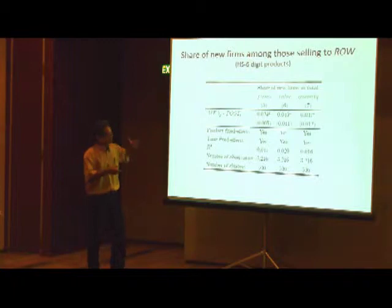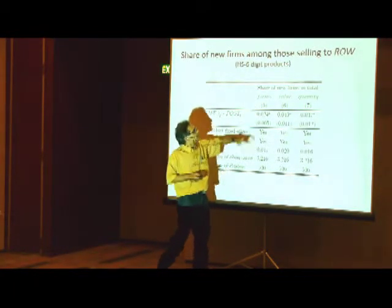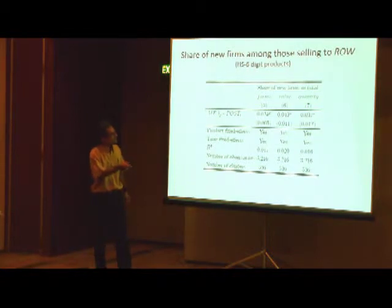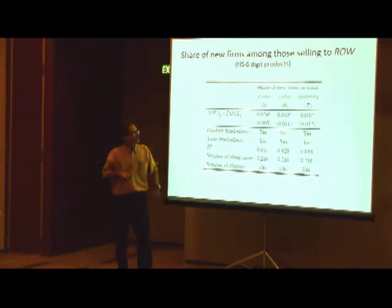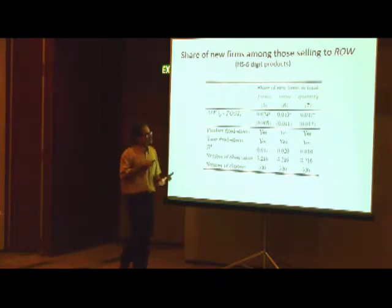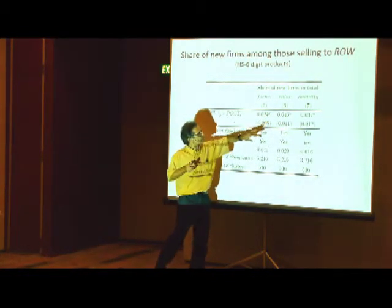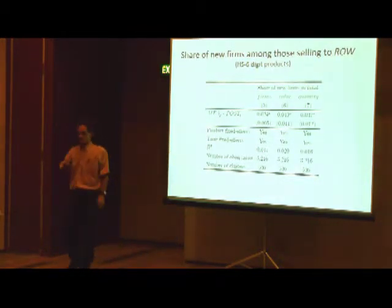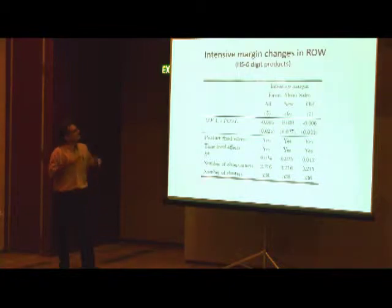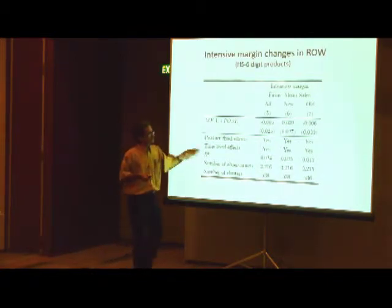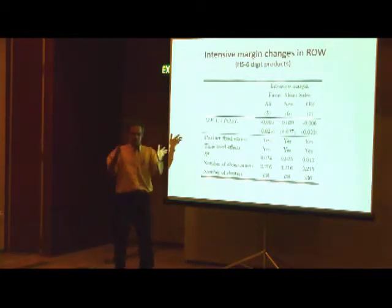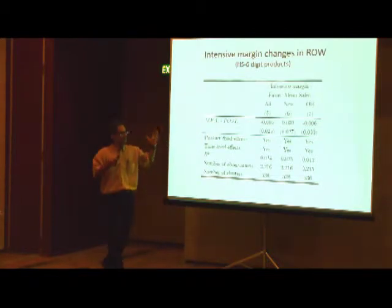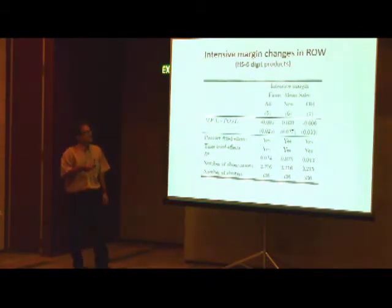There is an effect on the contribution of new firms to the exit rate, which increases after the shock — something we should expect: we have more entry, so we have more new firms, and these new firms are known to fail more quickly than established firms, and that shows up here as well. The key thing seems to be more entry. We also look at the share of new firms in total firms' value and quantity, and these new firms contribute in a significantly different way — more value and more quantity — relative to what happened before the shock. If you look at the intensive margin averaged over all firms, there isn't anything there.